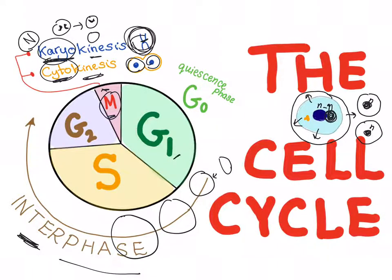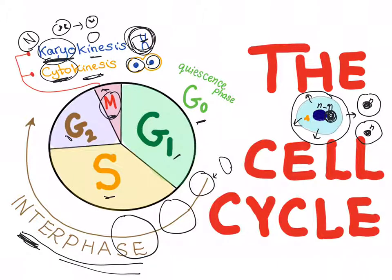G1, S, and G2 collectively are called the interphase; mitosis is just the M phase. If the cell is not ready to divide and needs to rest, it will quiet down in a phase called G0, or the quiescence phase — the silence or calmness phase. That's the cell cycle in brief.